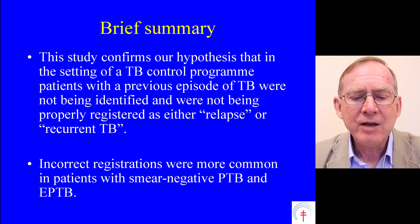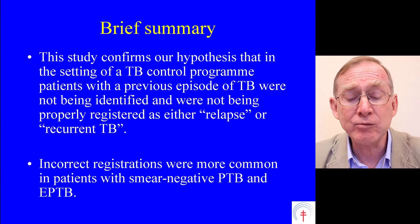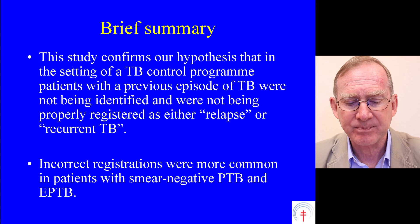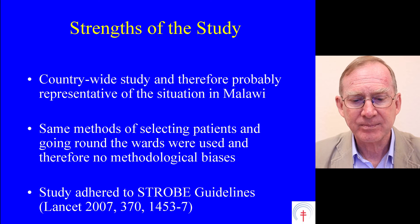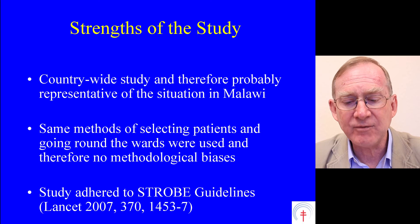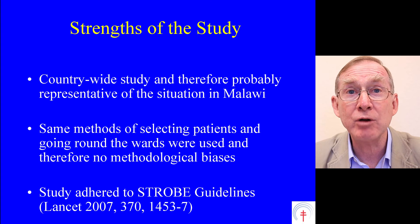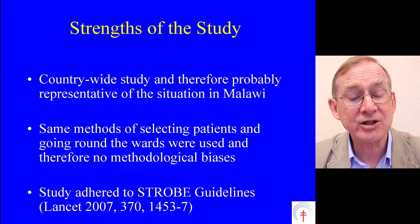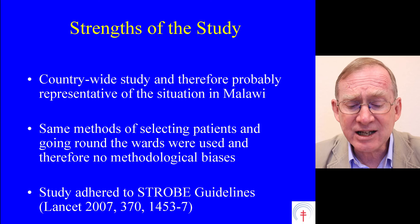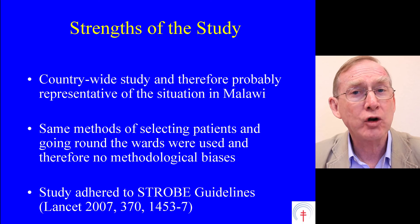First paragraph of the discussion: 'This study confirms our hypothesis that in the setting of the TB control programme, patients with a previous episode of TB were not being identified and were not being properly registered as either relapse or recurrent TB. Incorrect registrations were more common in patients with smear negative pulmonary TB and extra pulmonary TB.' Next paragraph: 'There were three important strengths of this study. First, it was countrywide and therefore probably representative of the situation in Malawi. Second, the same methods of selecting patients and going round the wards were used, and therefore there were no methodological biases. Third, the study adhered to STROBE guidelines — guidelines published in The Lancet and other journals laying out how we should report on observational studies.'